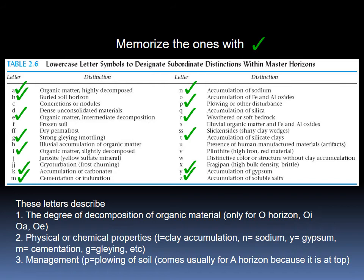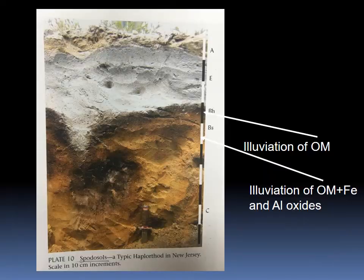Looking at this picture, how many master horizons does it have? We know there are six possible master horizon types. In this profile you have A, then E, then B, and then C — so four master horizons: A, E, B, and C. Not all horizons need to be present; only those four exist in this particular profile.